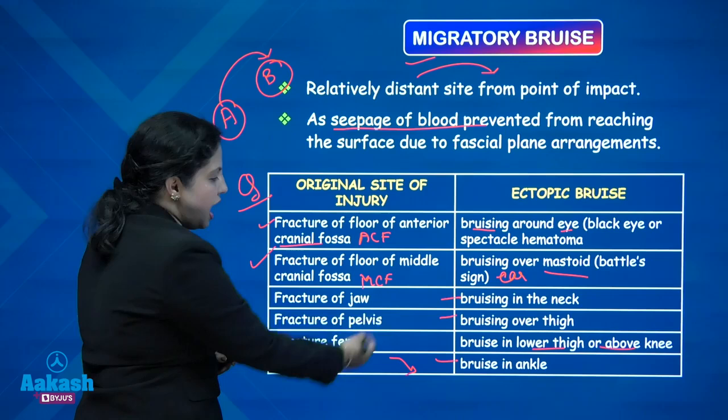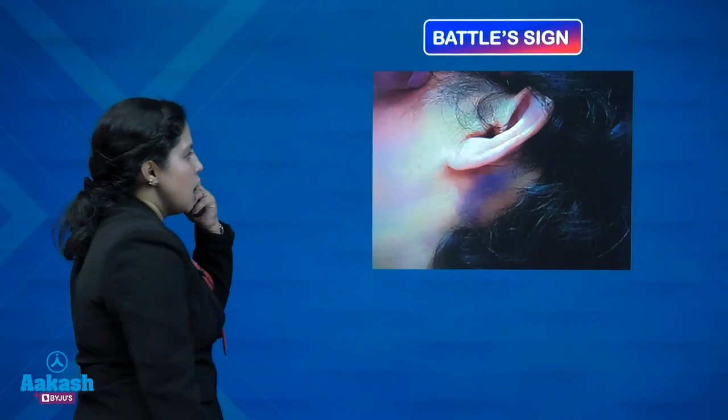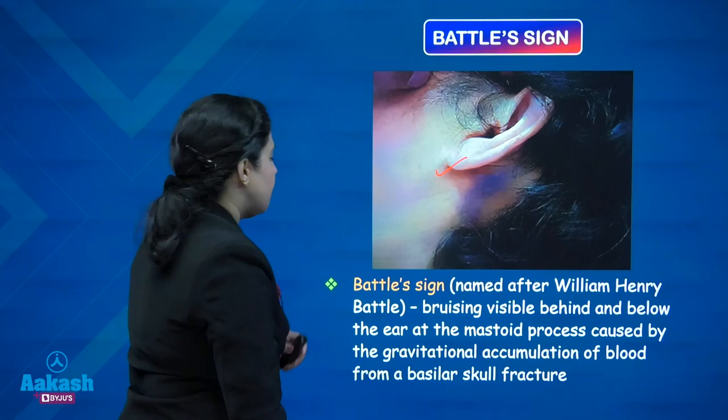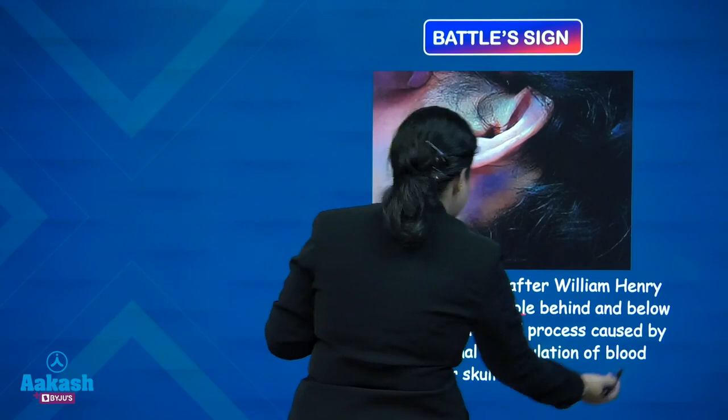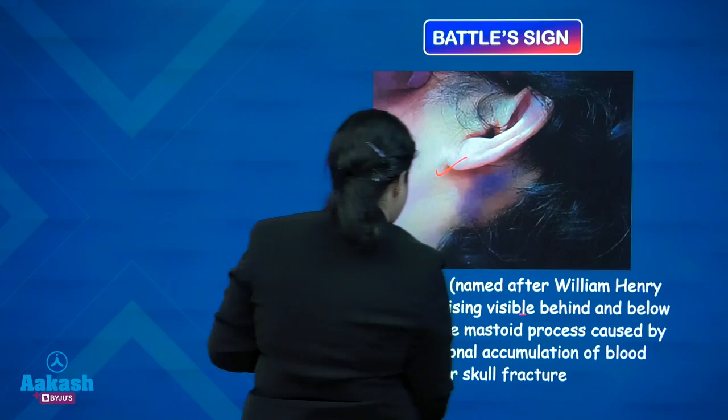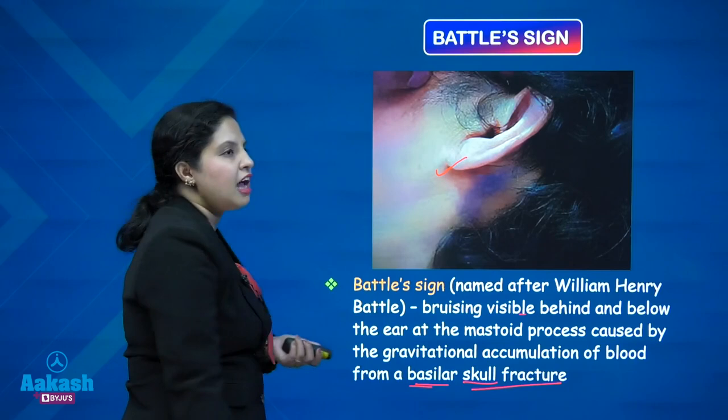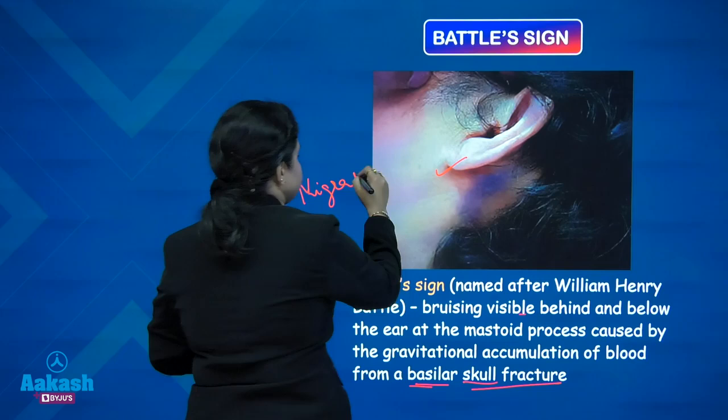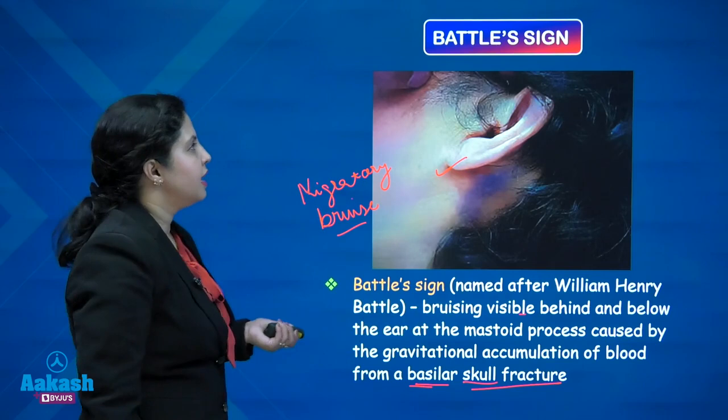Other migratory bruise examples include: fracture of the jaw causes bruising in the neck; fracture of the pelvis causes bruising over the thigh; fracture of the femur causes bruising over the lower thigh or above the knee; and calf injury leads to bruising in the ankle. Battle sign — bruising visible behind and below the ear at the mastoid process — was named after William Henry Battle and is caused by gravitational accumulation of blood from a basilar skull fracture.